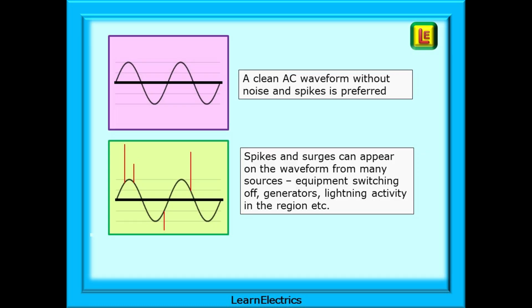We always imagine that the incoming AC waveform to an installation is nice and clean — a perfectly formed sine wave without noise or spikes. But there will always be noise and interference of some sort superimposed over the waveform. These spikes and surges can appear from many sources: from equipment switching off, from generators being used, or from lightning activity in the region. Most of the time they are insignificant and not really a problem.